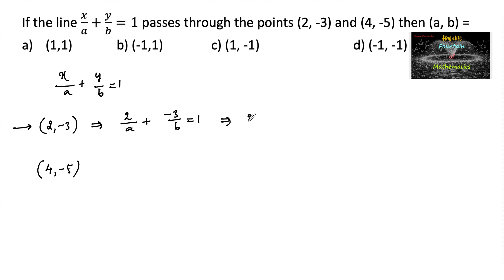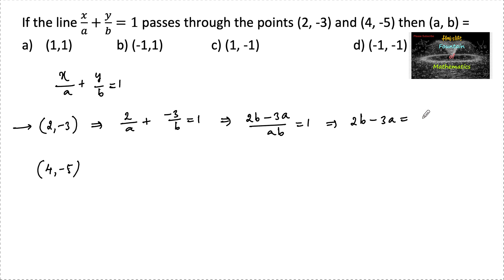We can write 2b minus 3a upon ab is equal to 1, or 2b minus 3a is equal to ab. Let us consider this as equation 1.